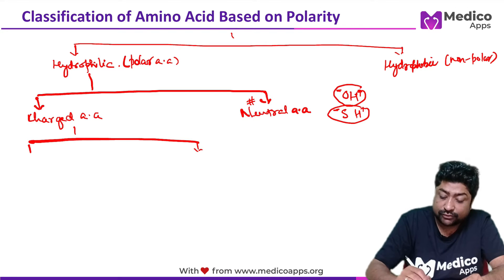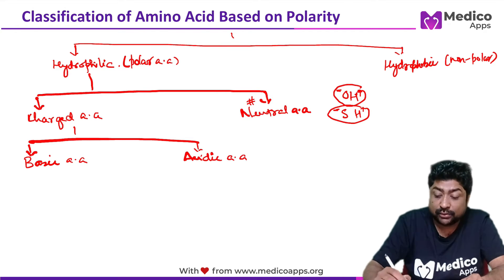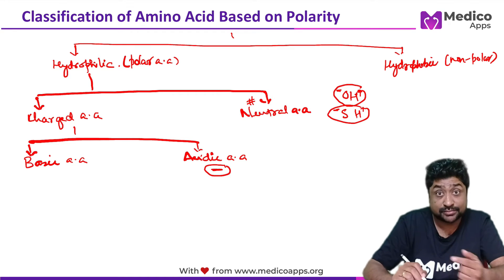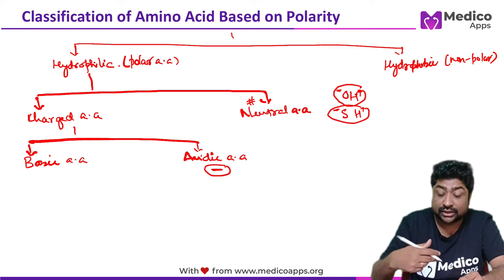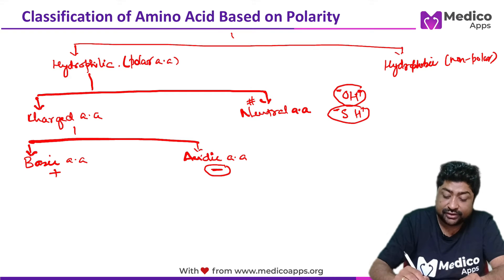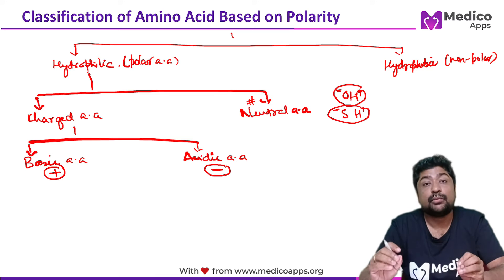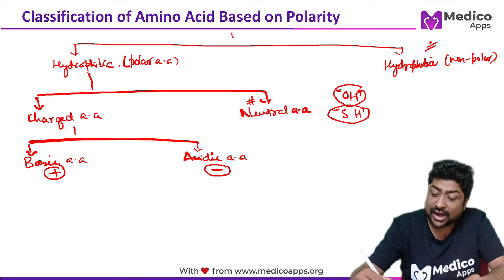Charged amino acids are further classified into basic amino acids and acidic amino acids. Acidic amino acids will lose their hydrogen ion and take on a negative charge. Basic amino acids will accept a hydrogen ion and themselves become positive. Now let's fill in which amino acid falls in which column.